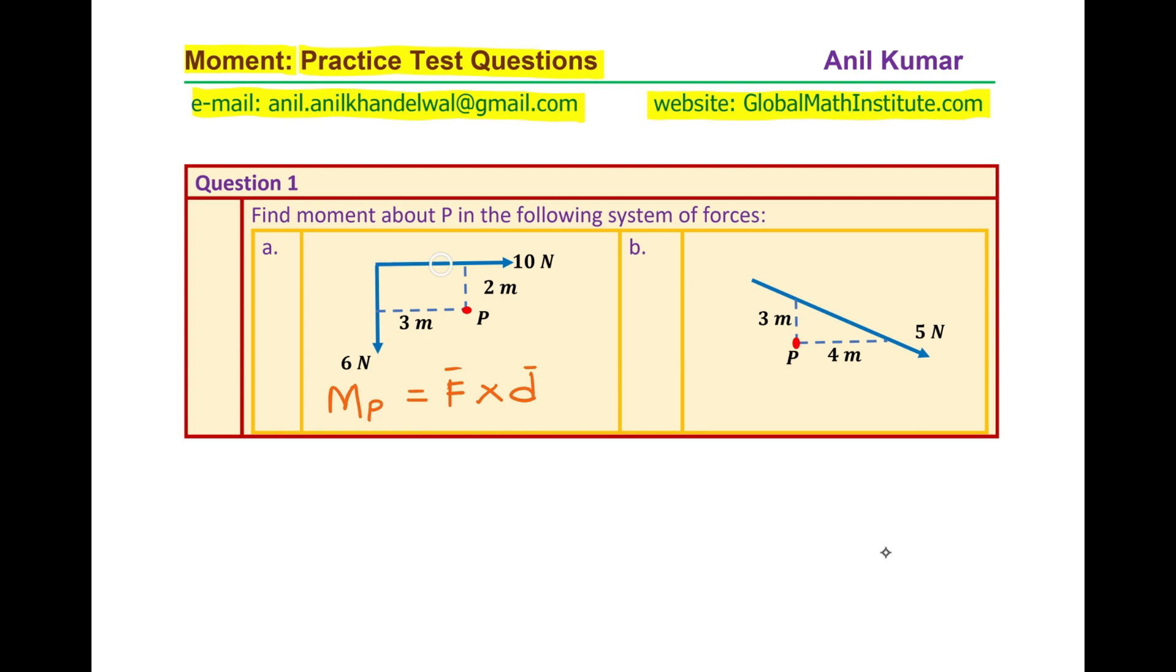So in this particular case the force of 10 newtons will cause moment about P which will rotate in the direction which is clockwise. So we can say moment at P because of 10 newtons will be 10 newtons times 2 meters and this will be clockwise.